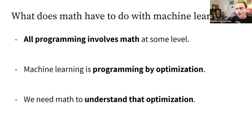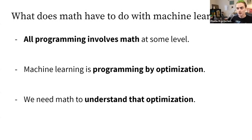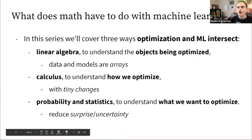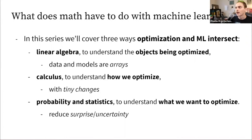In order to understand optimization — what it is that we're optimizing, and why and how that works — we need mathematics. This is what makes machine learning a much more mathematical discipline of programming than something like web development, database management, or other popular branches of programming. In this series we'll cover several ways that optimization and machine learning intersect.